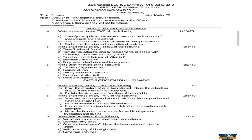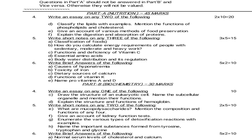Next question paper is June 2013. Nutrition essay questions: Classify the lipids with examples — mention the functions of phospholipids and cholesterol. Give an account of various methods of food preservation. Explain the digestion and absorption of proteins. Short notes — 5 marks, any 3 of the following: Classification of foods. How do you calculate energy requirements for people with sedentary, moderate and heavy work? Functions and deficiency of vitamin C. Essential amino acids. Body water distribution and dysregulation. Brief answers — 2 marks: Causes of hyponatremia. Toxicity of iron. Dietary source of calcium. Functions of vitamin K. Name pro-vitamins of A and D.